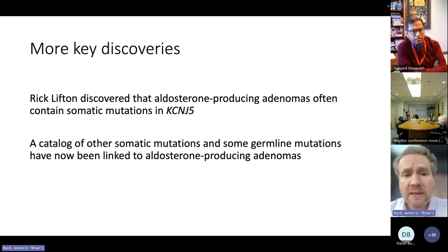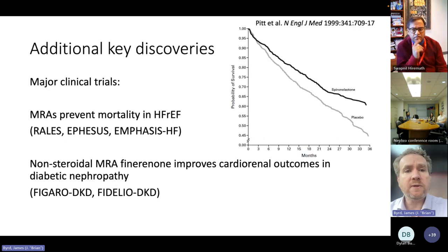There have been more recent discoveries. Rick Lifton discovered that aldosterone producing adenomas often contain somatic mutations in KCNJ5 and then a catalog of other somatic mutations and some germline mutations have now also been linked to aldosterone producing adenomas. We still lack substantive progress on why people develop bilateral idiopathic hyperaldosteronism. There's some hints that the adrenals in that situation do also contain mutations, but we're really very early in the process of understanding that.